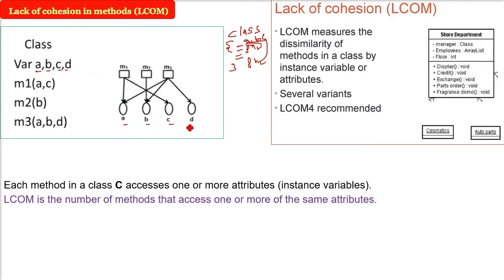For example, here variables A, B, C, D, E are given. Method 1 is accessing A and C. Method 2 is accessing B. Method 3 is accessing A, B, and D. This is what I'm talking about: the number of methods that access one or more of the same attributes.